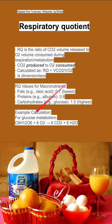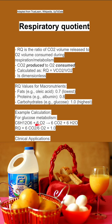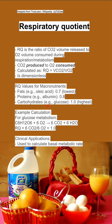There's an example calculation listed below. For glucose metabolism, you have a glucose molecule that requires a certain amount of oxygen to produce six carbon dioxides and six water molecules. The respiratory quotient can then be calculated as six carbon dioxides over six oxygens to get 1.0, which makes sense because glucose is a carbohydrate.